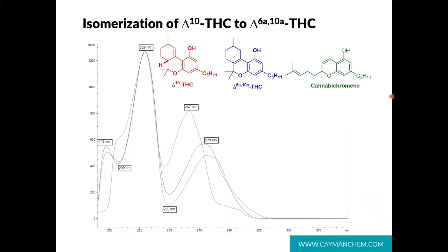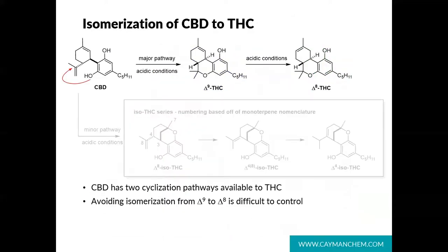I want to now shift our attention to the reactions of cannabidiol. Cannabidiol, or CBD, serves as another way to access the THC structure, and one that some people appear to be exploring and exploiting. Under acidic conditions, CBD can cyclize to delta-9 THC, but this cyclization is difficult to control as it usually involves heating to increase the rate and overall conversion of the reaction. Heating with an acid catalyst present leads to a mixture with delta-8 THC, which as I previously discussed is a major degradant of delta-9 THC. Over time, as CBD is fully converted, the delta-8 isomer will become the major isolated product of this reaction.